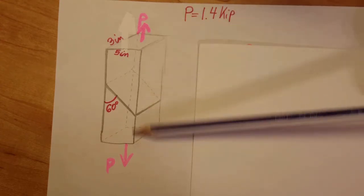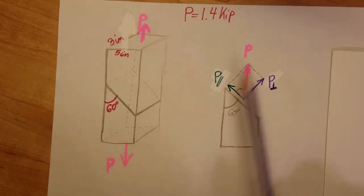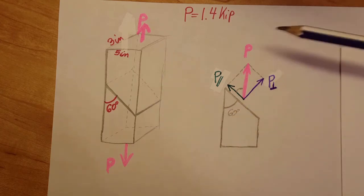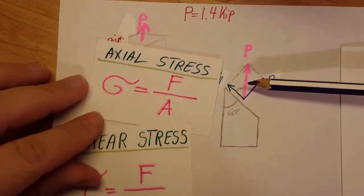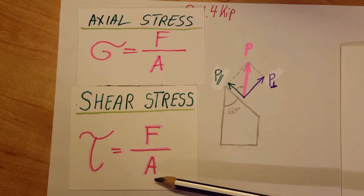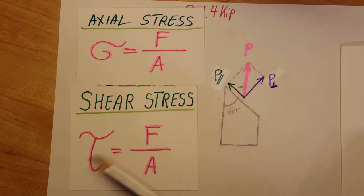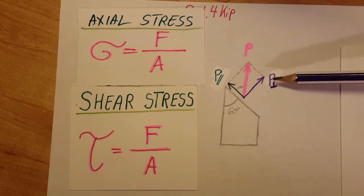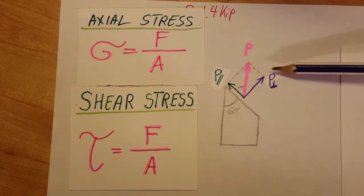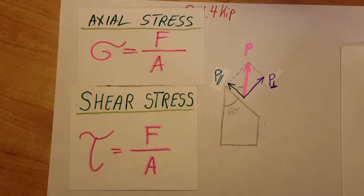We have a force pulling the assembly apart. To better see the interior forces, we redraw it and omit one side — just the bottom part. We break up our force because the normal stress formula is force over area perpendicular to the surface, and shearing stress is force over area parallel to the surface. Our force P is neither, so we use vector calculations to find a perpendicular and a parallel component, from which we can find our stresses.